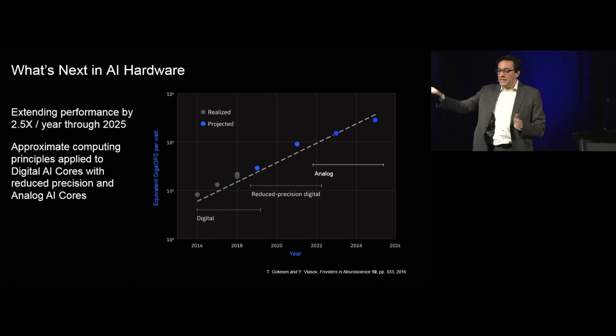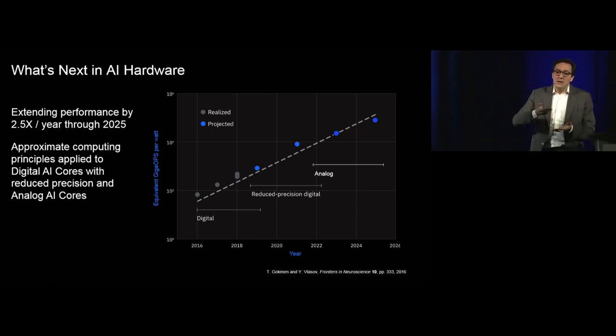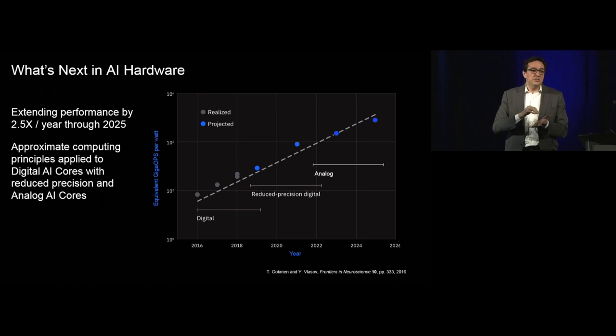What is this journey going to give us? If you plot it all together in performance, remember we have this computational demand of doubling every three and a half months. I think we certainly see a roadmap of being able to deliver at least two and a half X per year in terms of computing performance for these kinds of deep neural networks. We're going to see this journey between the current digital systems, the reduced-precision digital architectures, and beyond that, either having mixed systems or analog systems.